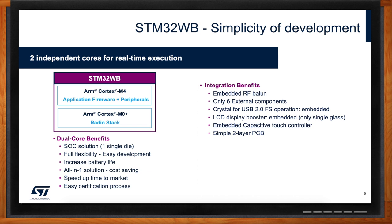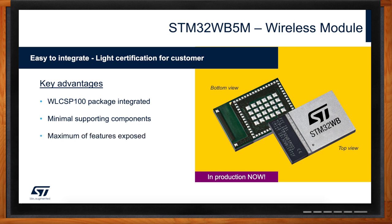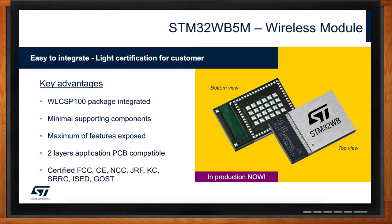A new module has been recently introduced as a great addition to the WB family. For customers who want to accelerate time to market, it avoids redoing certification and removes the need to build a highly skilled RF team. The module is very small — 7mm by 11mm — integrates an antenna, and includes many peripherals from the STM32WB55 chip inside. It simplifies development significantly, is pre-certified for most regions, and is in full production now.